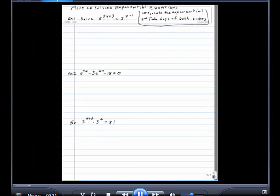First step is isolate the exponential. Remember the exponential consists only of a base and an exponent, and there's nothing else in the exponential. Isolate the exponential, then take logs of both sides.